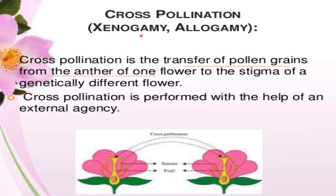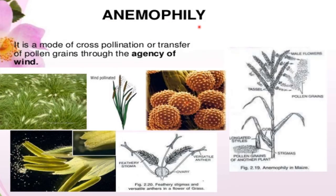Cross pollination, also called xenogamy or allogamy, is the transfer of pollen grains from the anther of one flower to the stigma of another genetically different flower. Cross pollination is performed with the help of an external agency. Anemophily is a mode of cross pollination involving transfer of pollen grains through wind. Examples are coconut palm, date palm, maize, many grasses, and cannabis.